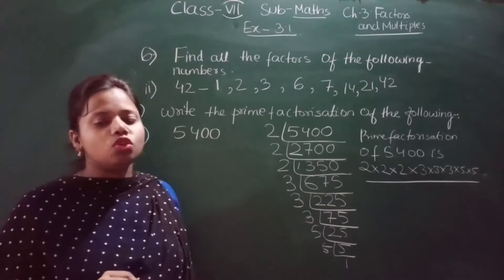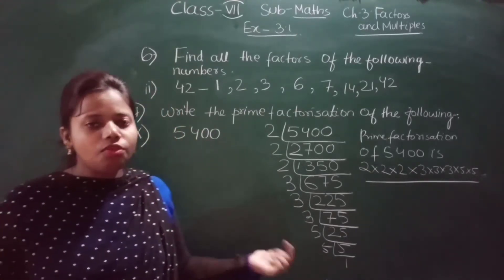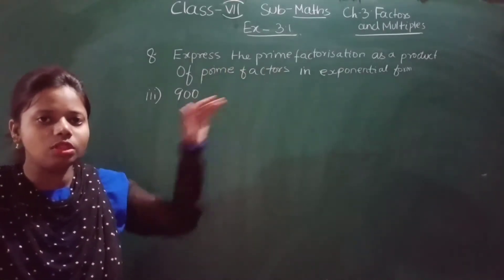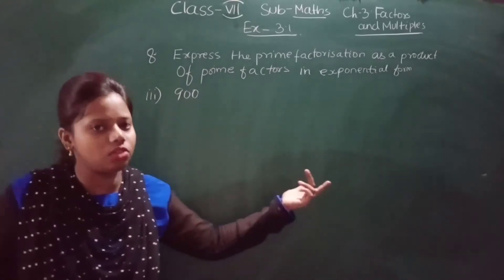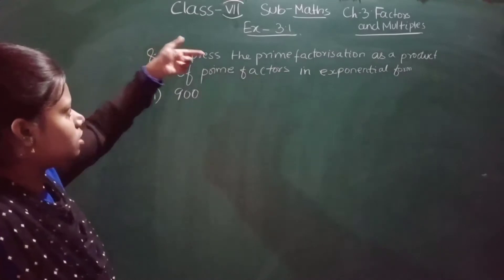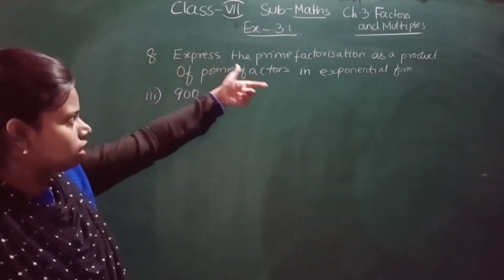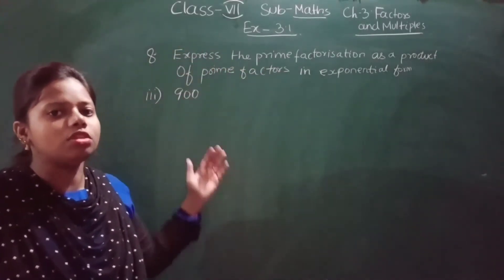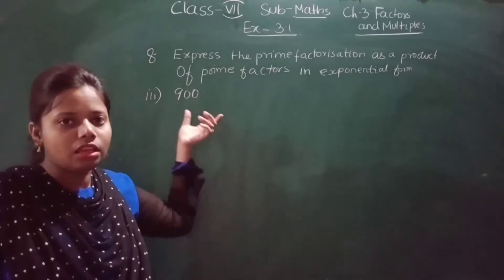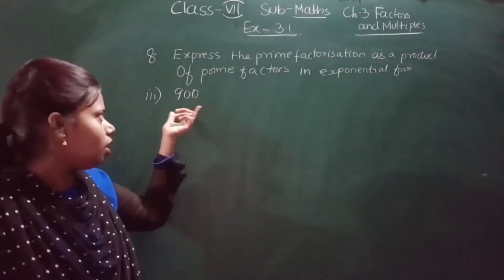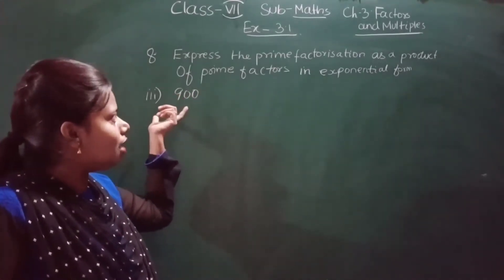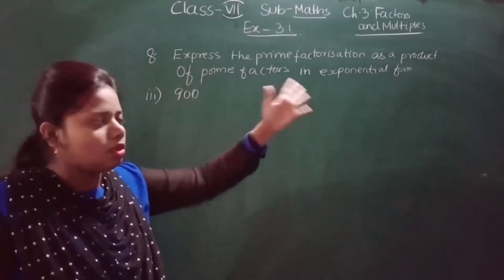Now let us do question number 8, which is the last question of exercise 3.1. Question 8 says: express the prime factorization as a product of prime factors in exponential form. I have chosen question 3, where the number given is 900. We are going to find the prime factorization and then express it in exponential form.